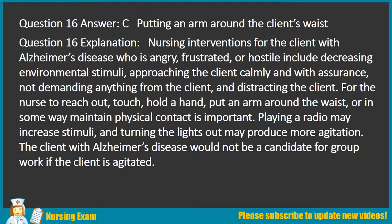Explanation: Nursing interventions for the client with Alzheimer's disease who is angry, frustrated, or hostile include decreasing environmental stimuli, approaching the client calmly and with assurance, not demanding anything from the client, and distracting the client. It is important to reach out, touch, hold a hand, or put an arm around the waist to maintain physical contact. Playing a radio may increase stimuli, and turning the lights out may produce more agitation. The client with Alzheimer's would not be a candidate for group work if agitated.